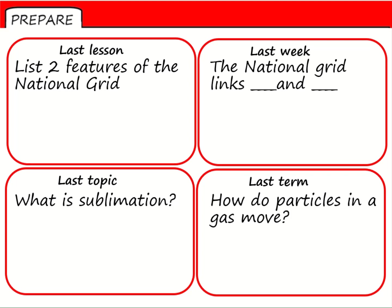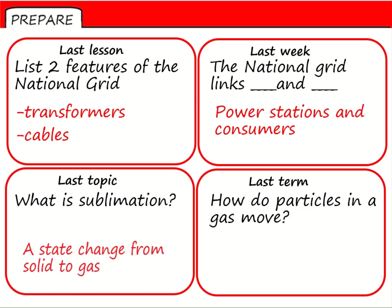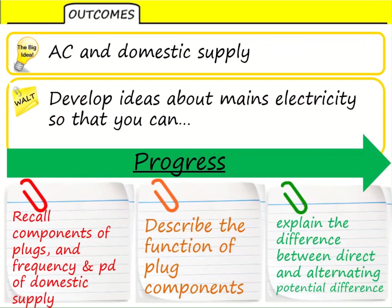Looking at the answers now: the national grid is made up of transformers and cables, and it links power stations with consumers like houses, businesses, and schools. Sublimation is a state change from solid to gas. And for gas particles, there are two marks: particles move randomly, and they move at a range of speeds.